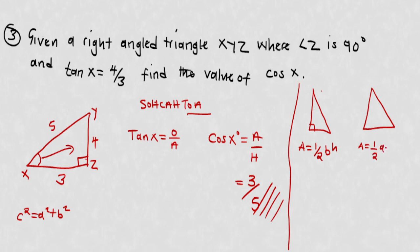To find the area of any triangle, the formula is: area equals half times a times b times sine C, where a and b are two sides and C is the included angle between them — the angle opposite side c. This formula works for any triangle.